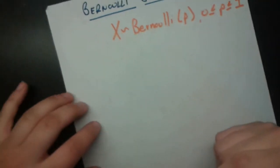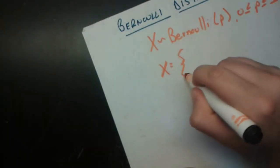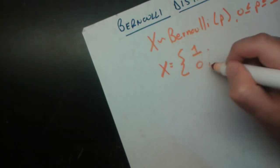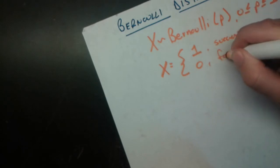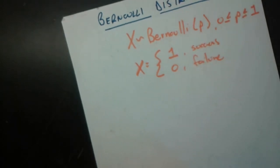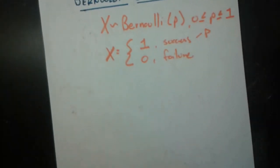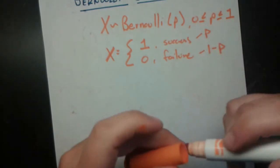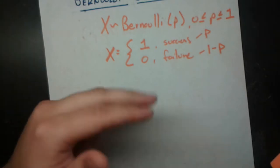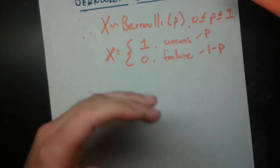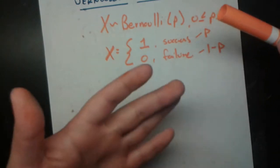We say that this is true if x has the following definition. x can either take the value 1 or the value 0: value 1 if we have a success, and value 0 if we have a failure. Furthermore, the probability of a success is p, and therefore the probability of a failure must be 1 minus p. All it's saying is that this random variable takes one of two values, 1 or 0, based on whether we have a success or failure, with probabilities p and 1 minus p respectively.